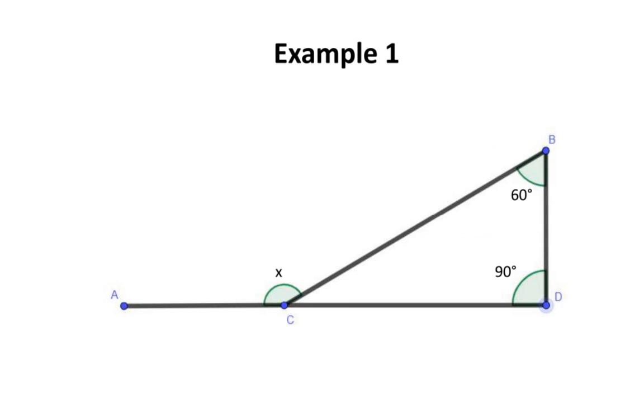In our first example, we need to determine this unknown angle. Based on the relationship we just discovered, these two interior angles should add up to this unknown angle.